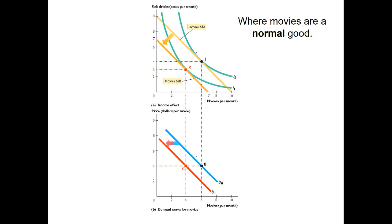We can represent this by shifting the demand curve over to the left, so that now the new demand curve is the red line. At the price of $4, the quantity demanded is now 4. So when we change the consumer's income, we shift the budget line parallel, and as a result the demand curve for the product will shift as well — either to the left, indicating a decrease in demand due to a change in income.